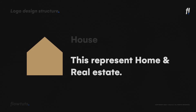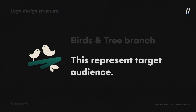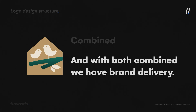The first element is the house, which represents home or real estate. The second thing is the birds and the tree branch — these represent the target audience, which is the couples and the families. The branch can also represent home because that's where the birds have their nest. When we combine the house with the birds and tree branch, we have a logo that represents the brand message.